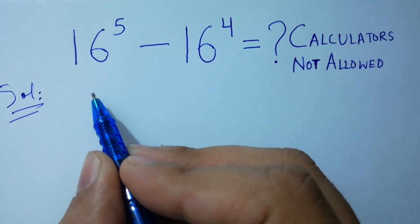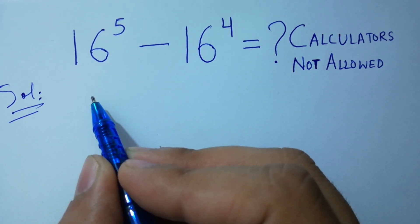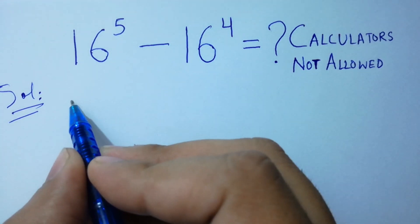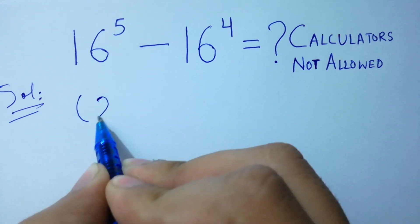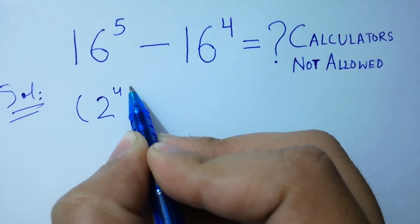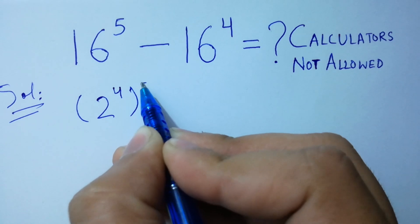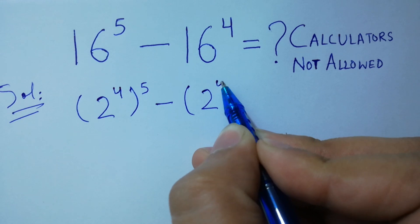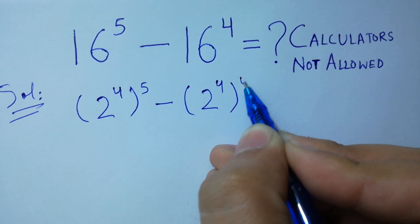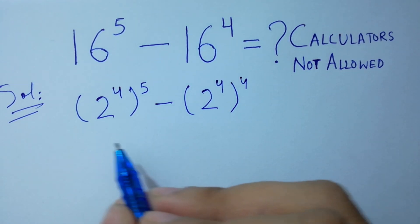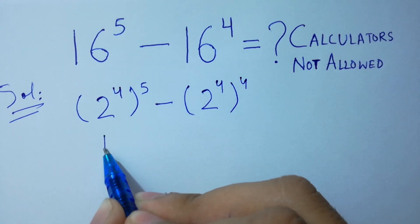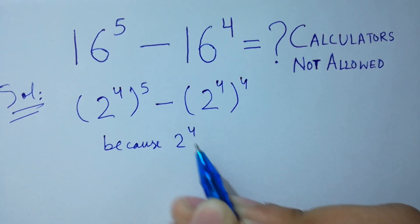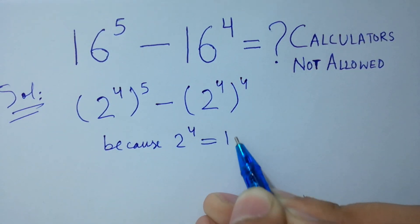Here, 16 to the power 5 minus 16 to the power 4 is the same as 2 to the power 4 to the whole power 5 minus 2 to the power 4 to the whole power 4, because 2 to the power 4 equals 16.